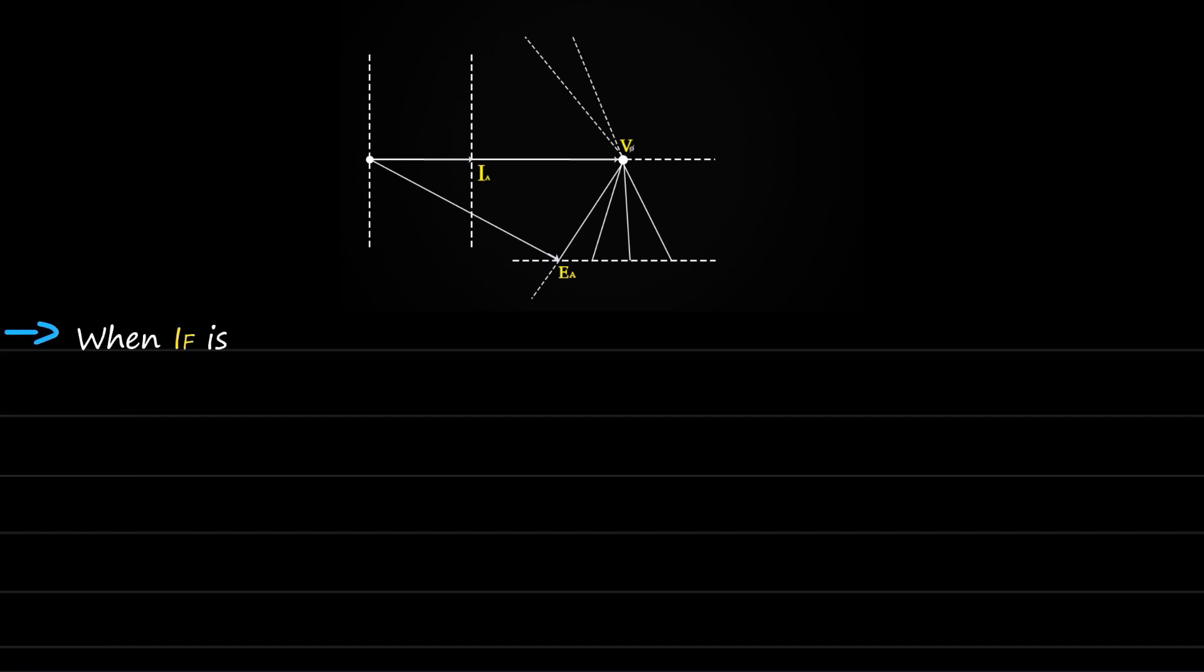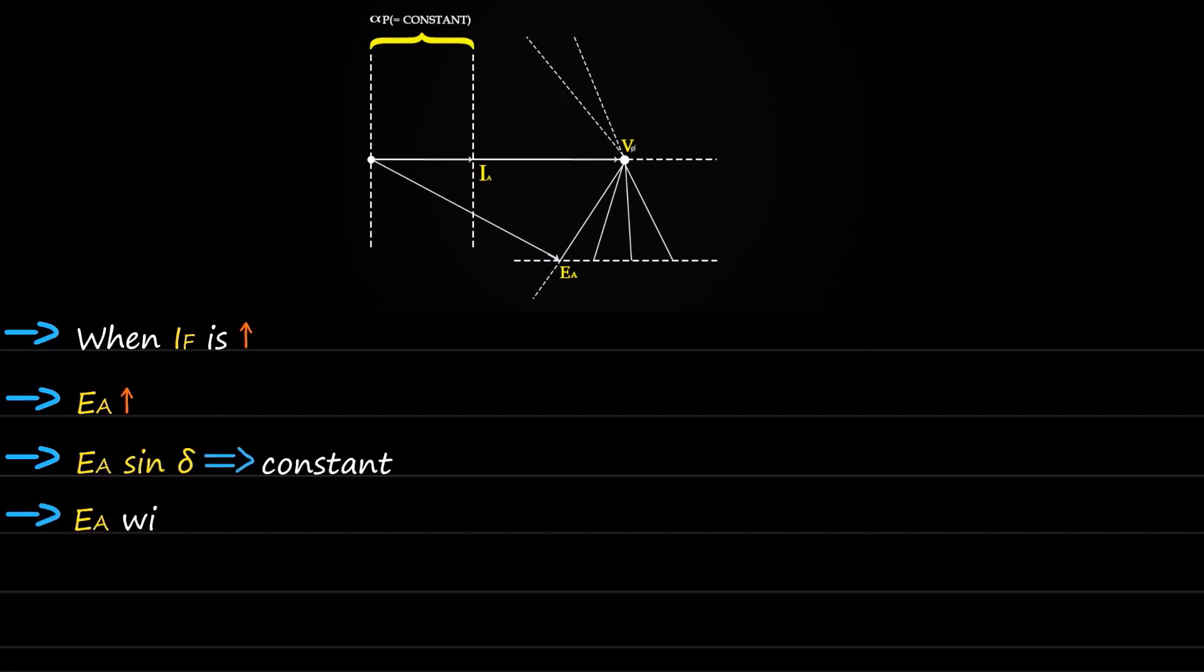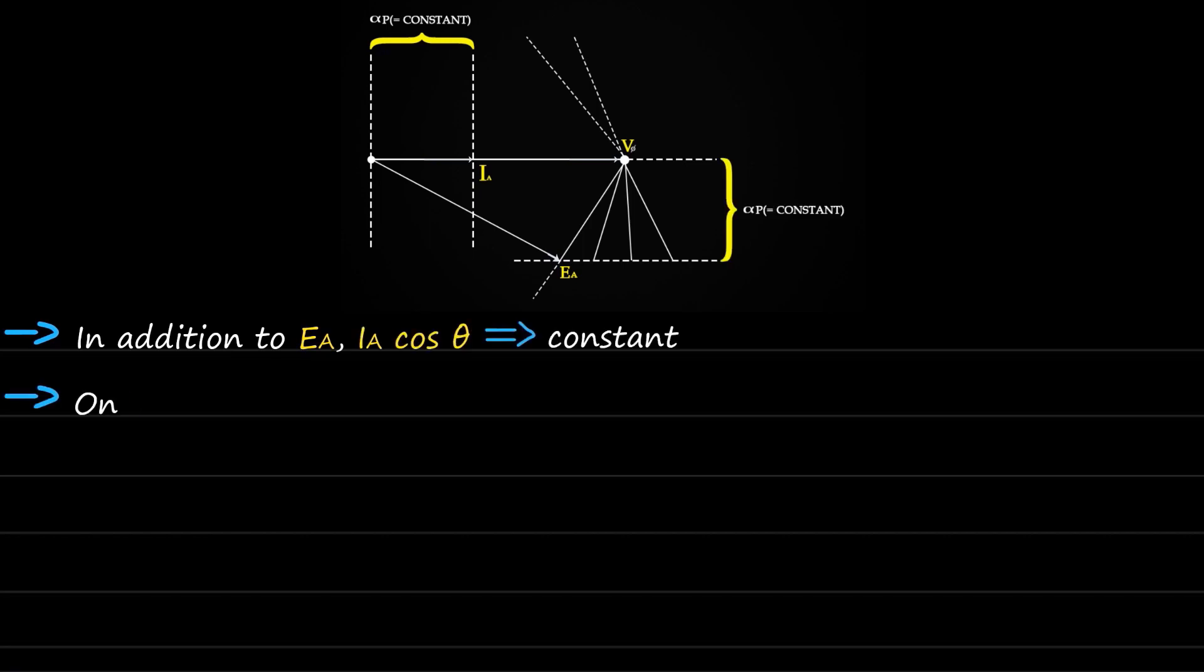When the field current IF is increased, Ea increases. Since we have to keep Ea sine delta constant, Ea will be increasing along this plane and angle delta will decrease. In addition to Ea, remember we have to keep Ia cos theta constant. So on increasing IF, Ia will increase along this plane and angle beta will also change.